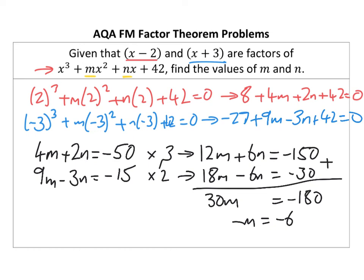Excellent. Now, if I know that M equals negative 6, I can put that into one of these, doesn't matter which. I'm going to put it into the first one. So we get minus 24 plus 2N equals negative 50. So I end up with 2N equals 26. So N equals 13. Hang on, sorry, negative 13.